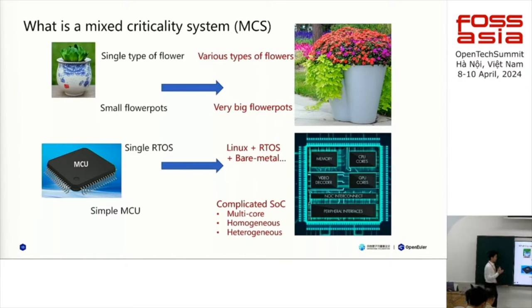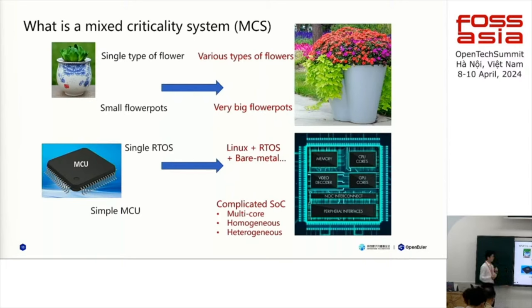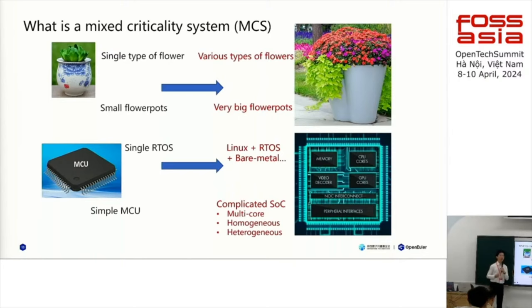Moving back to computer science: in the past, we only had very simple hardware like tiny MCUs, so we could only run bare metal applications or small RTOS. Nowadays, we have very complicated SoCs with multi-cores, even heterogeneous cores, so we can run more than one OS — like Linux plus RTOS plus other bare metal applications. But to ensure safety, we need to provide an isolation mechanism so that if one OS dies, it will not affect other OS running.